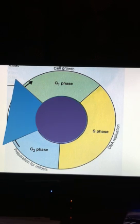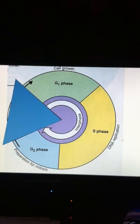Now, G1, S, and G2 make up part of the cell cycle called interphase. Interphase is where the cell spends 90% of its life.